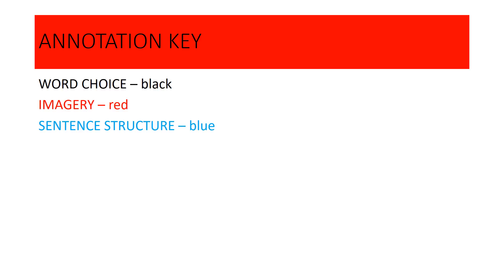I've included a key: word choice in black, imagery in red, and sentence structure in blue — just like we do in class. You can highlight, use coloured pens, or make up your own key. After each stanza, I'd suggest you listen to the stanza and annotations first, check you understand it, then pause at that slide and copy the annotations onto your own copy. Remember it's okay to shorten things, but don't change the meaning.